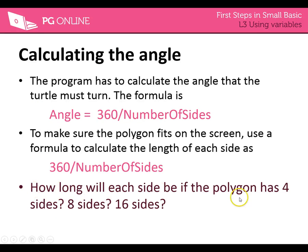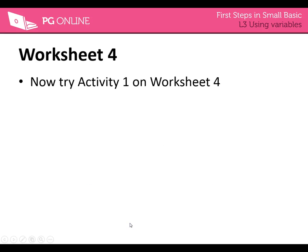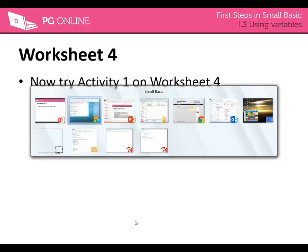And a little question here: how long is each side? If it's got four sides, you put 360 degrees divided by 4, which gives you 90 — 8, 16. So have a go at working those out. Then you're going to continue with Activity 1 on Worksheet 1.